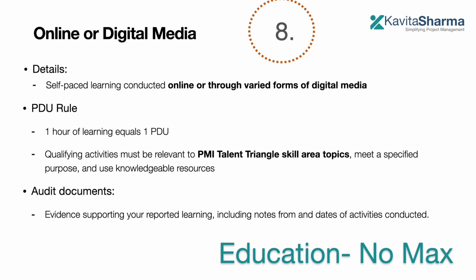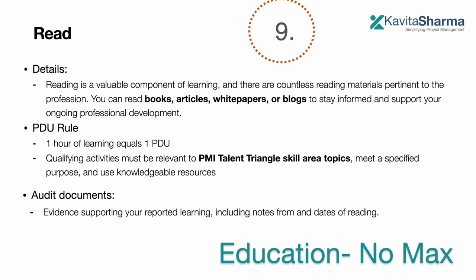You can also earn PDUs by enrolling in online self-paced learning — one hour of learning is one PDU. The learning should be part of the PMI Talent Triangle and meet its subjects. You can also read books, articles, white papers, or blogs — one hour of reading is one PDU. Supporting documents include notes, date of enrollment, date of reading, a certificate, or a book receipt.